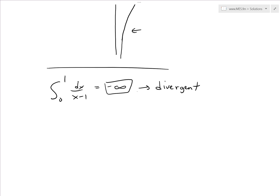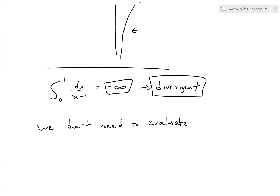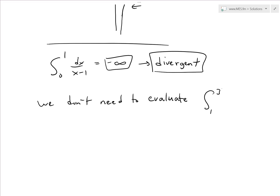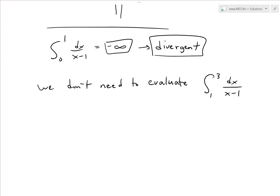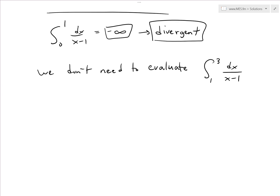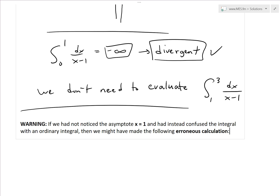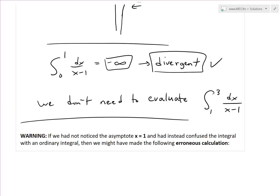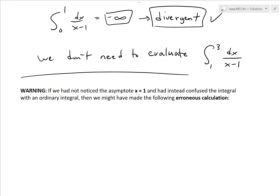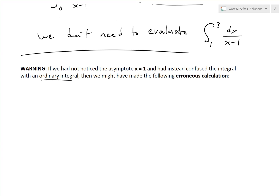Since the first part is divergent, we don't need to evaluate the second part — the integral from 1 to 3 of 1 over (x minus 1) dx. Negative infinity plus or minus whatever that number is doesn't matter; we still get a divergent result. The limit does not exist. This brings us to the warning made at the start.